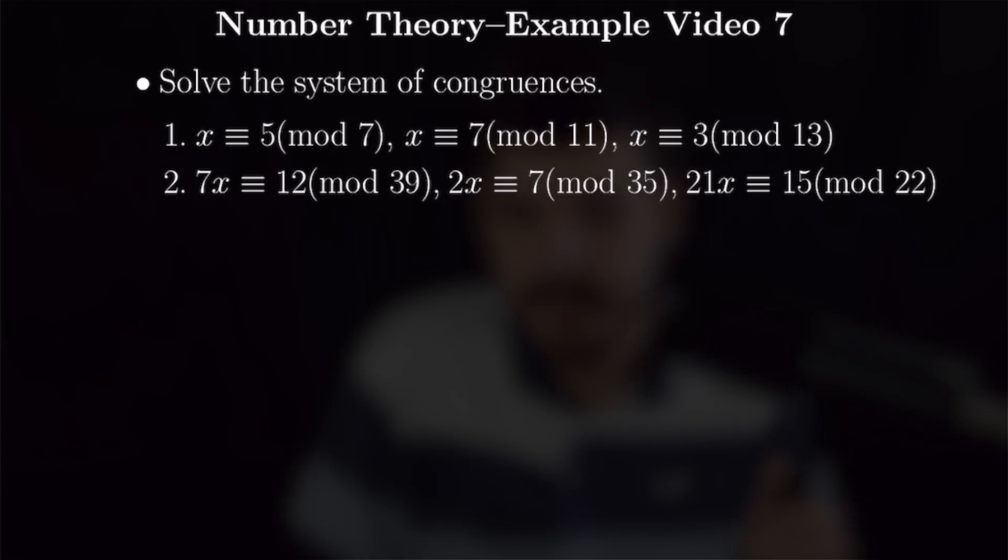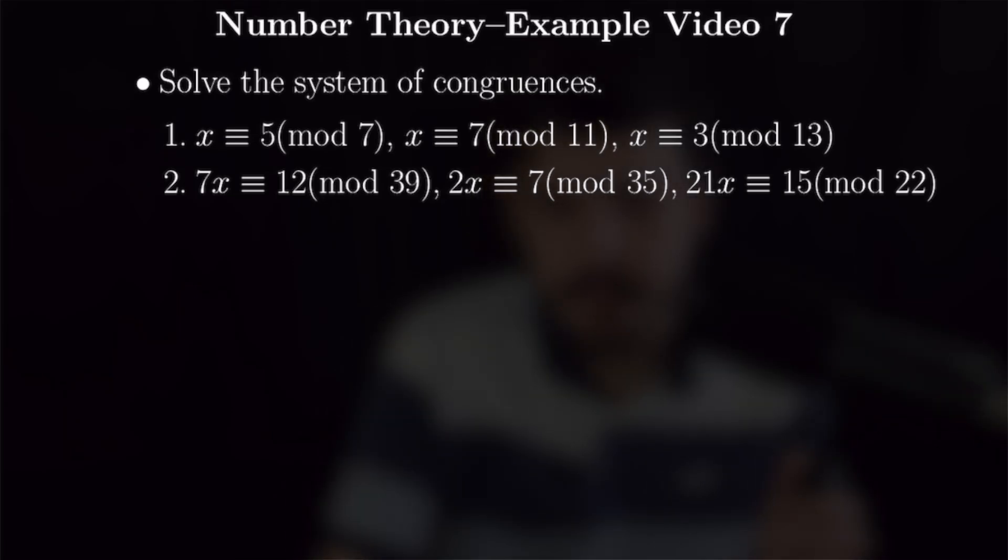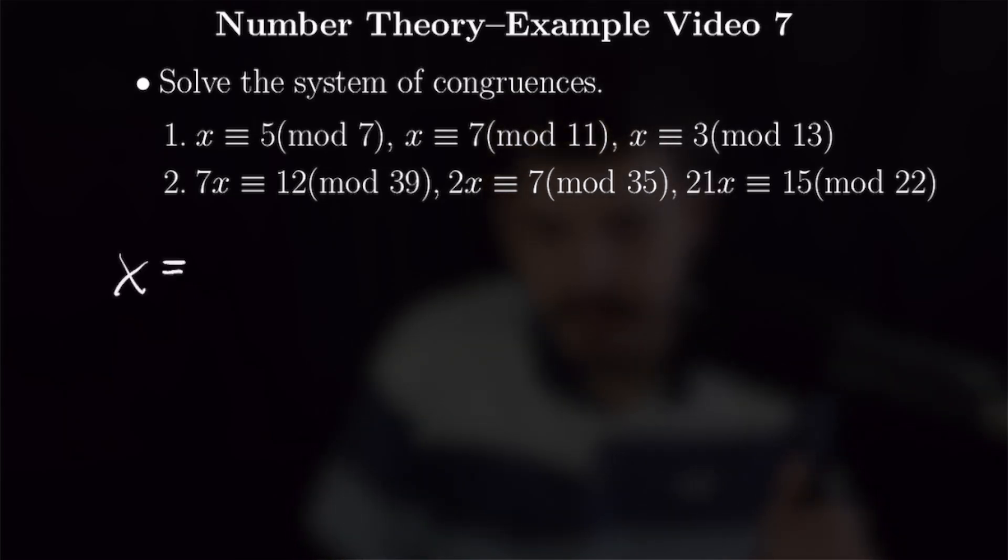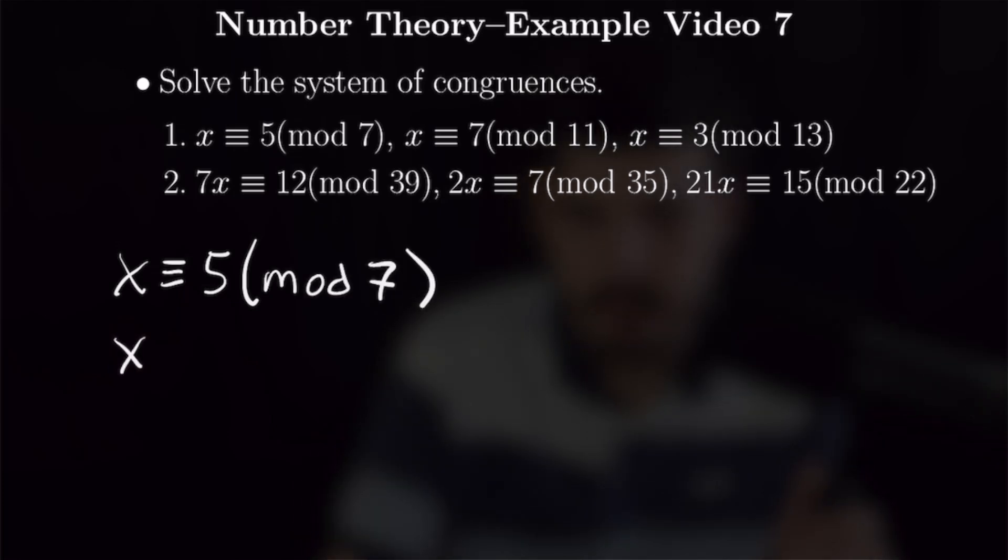Our first two problems for this video are going to be solving systems of congruences using the Chinese remainder theorem. So for this first system, we have x congruent to 5 mod 7, x congruent to 7 mod 11, and x congruent to 3 mod 13.